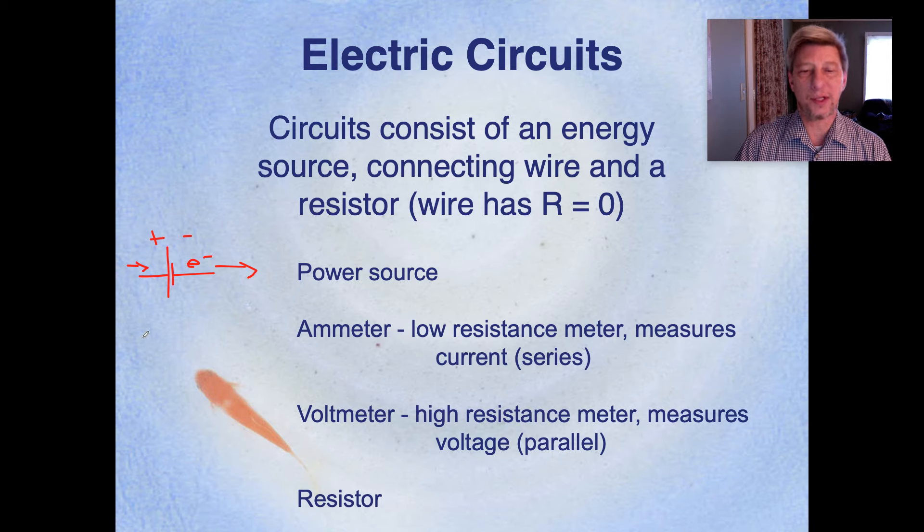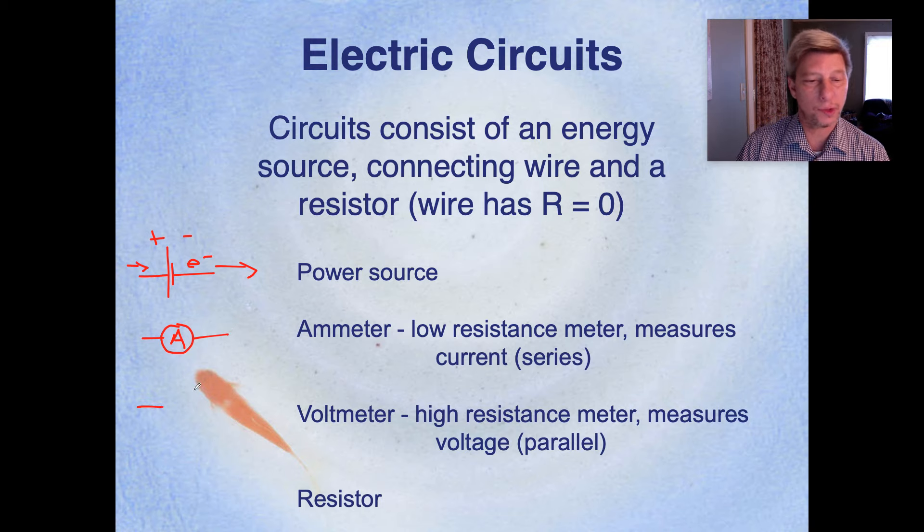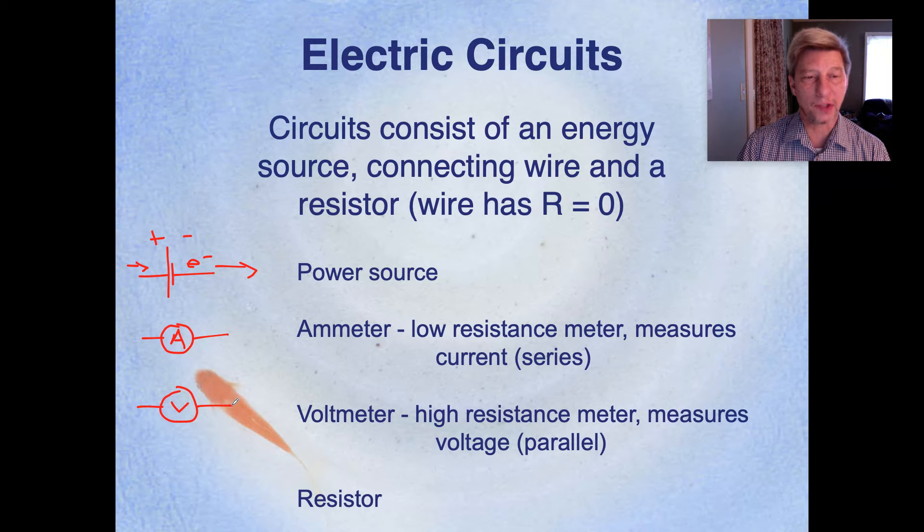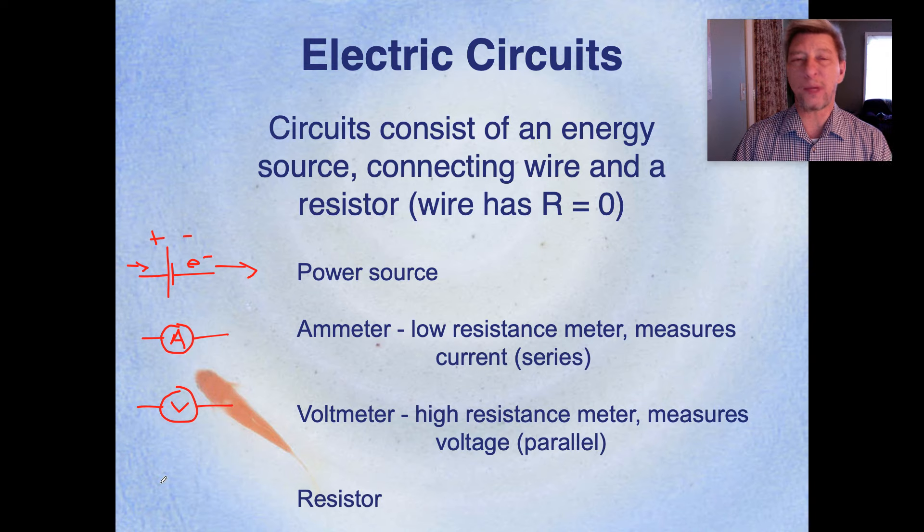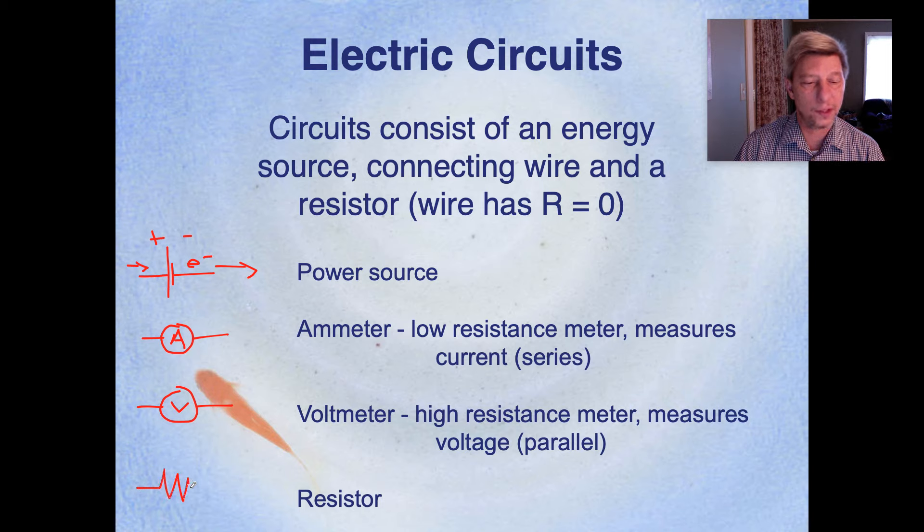An ammeter is a meter that we use to measure current, amps, ammeter. And so we draw that like this. A voltmeter is a high resistance meter, which we use to measure the potential difference between the two sides. And we draw that like so. And finally, a resistor is whatever the piece of equipment is that's using the electric power. It could be a light bulb. It could be your cell phone. It could be your refrigerator. Anything that uses that electricity. But we represent that with a series of squiggly lines.